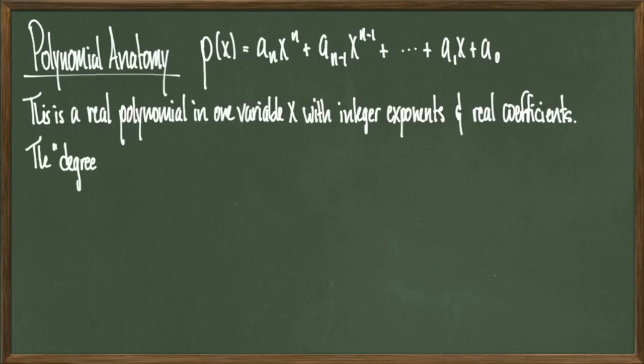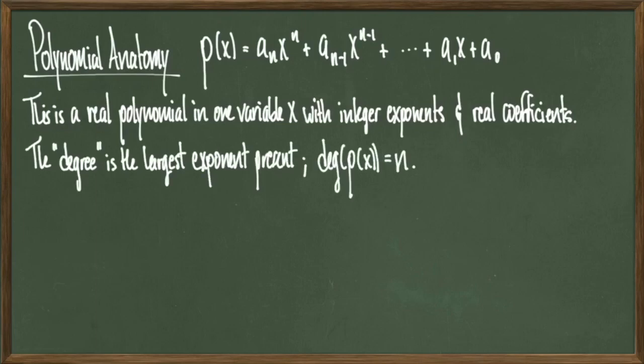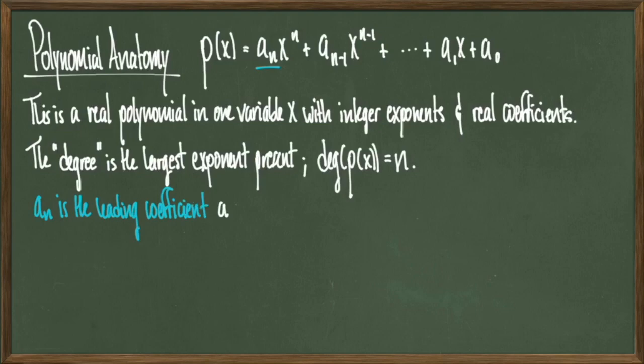The largest power, n, is called the degree of the polynomial and is often noted as deg(p(x)) = n. The leading coefficient is the coefficient of the variable with the largest power. So in this general example, aₙ is the leading coefficient of p(x), and a₀ is called the constant term because it is not the coefficient of a variable.